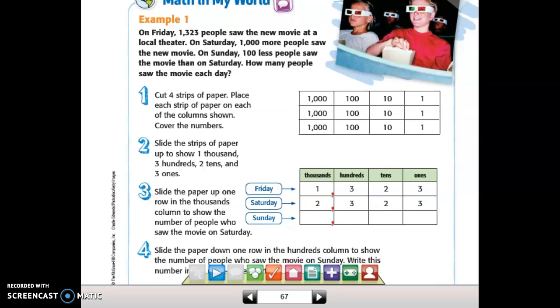So example 1, on Friday, 1,323 people saw the new movie at a local theater. On Saturday, 1,000 more people saw the new movie. On Sunday, 100 less people saw the movie than on Saturday. How many people saw the movie each day?